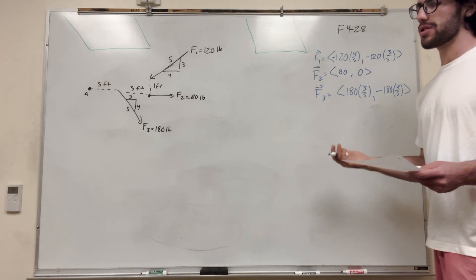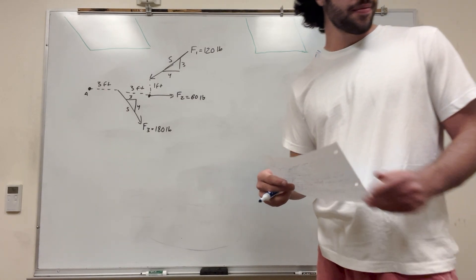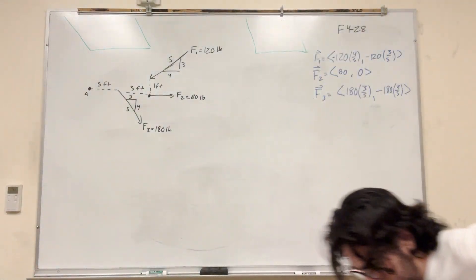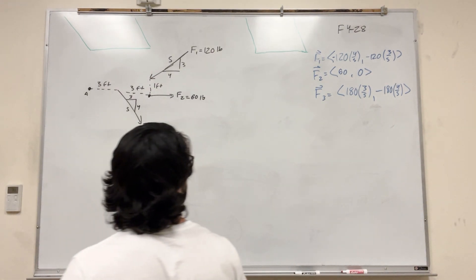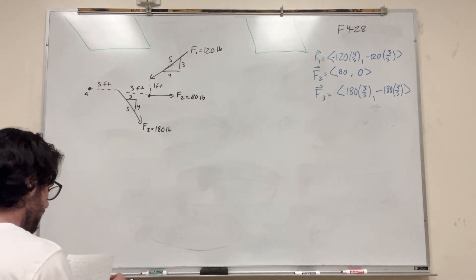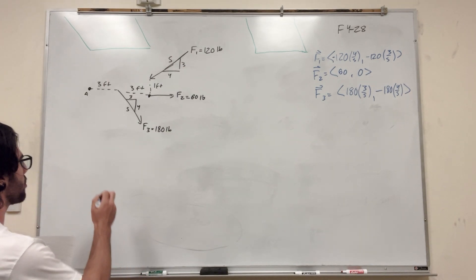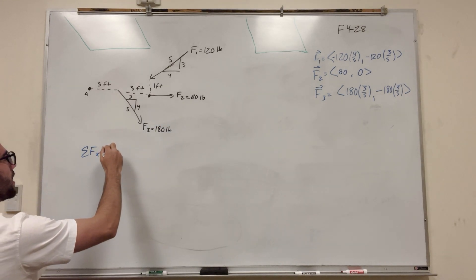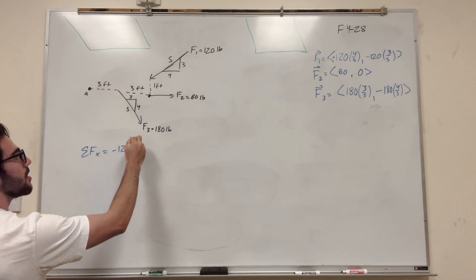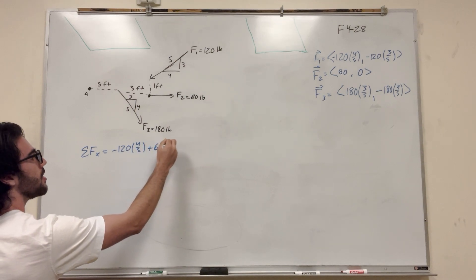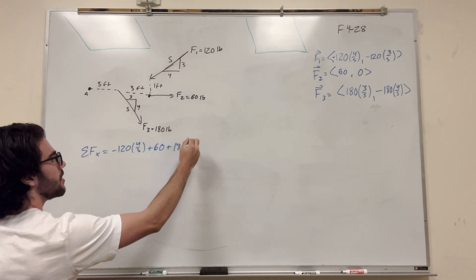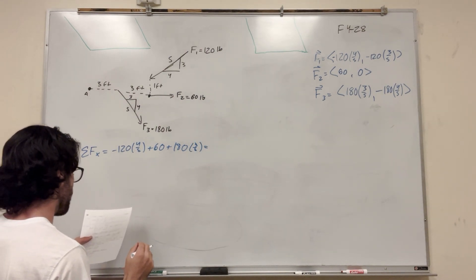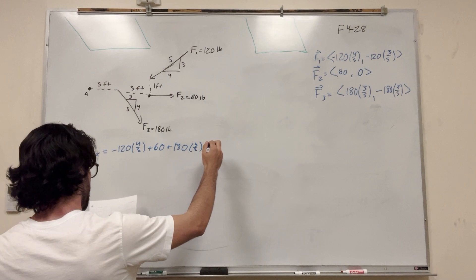These are the three forces written as vectors. Now we want to find the resultant force. All we have to do is take the sum of the forces in x and the sum of the forces in y. So the sum of the forces in x: add up all the x's — it's negative 120 times 4/5, plus 60, plus 180 times 3/5. That gives us 72 pounds.